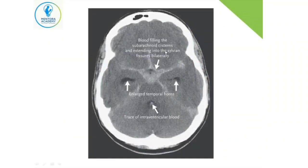Here is a CT image of a patient with subarachnoid hemorrhage. You can see the subarachnoid spaces filled with blood. Unlike extradural or subdural hemorrhage, the blood is not seen at the periphery but within the subarachnoid spaces. Sometimes it may not be visible at all.